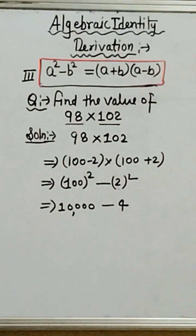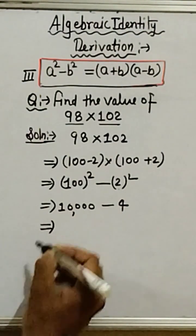Now, we have 10,000 minus 4. 10,000 minus 4, how?